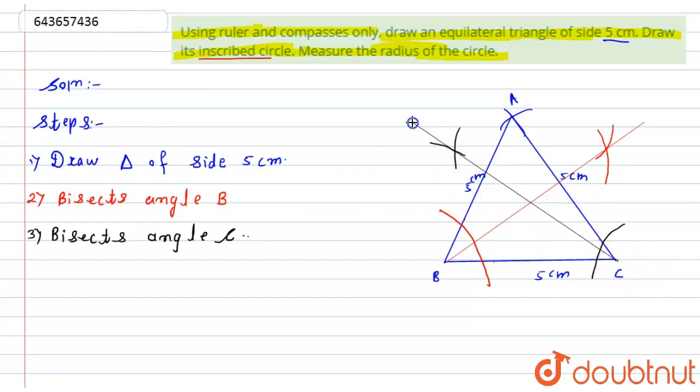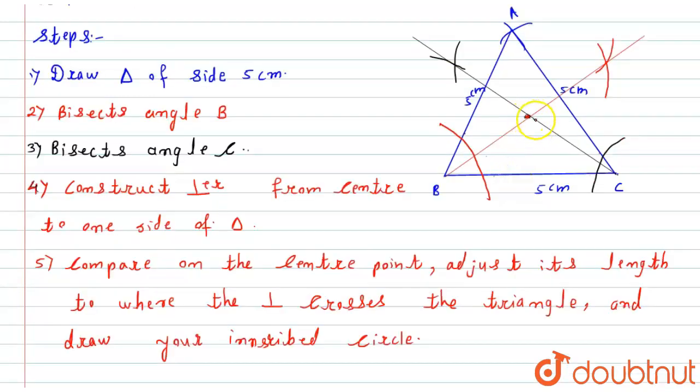So at whatever point they will intersect, that point will be my center of the circle. Now here, by taking this as a center, from this point of intersection I will draw a perpendicular. That is, construct a perpendicular from center to one side of the triangle.